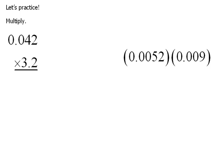Let's practice. Here we have a problem that says multiply 0.042 times 3.2. Now, what we're going to do first is we're just going to ignore all these decimals and zeros, and we're just going to multiply as if it were 42 times 32.